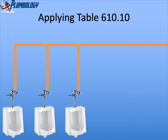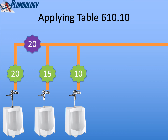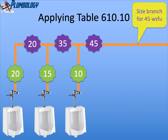If we have three urinal flush valves, same sequence starting with 20, then 15, and the third one is 10. The water pipe segments will be 20 plus 15 equals 35, plus 10 equals 45. We size the branch serving three urinal flush valves for 45 water supply fixture units.